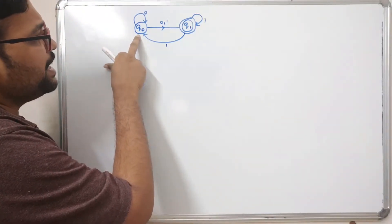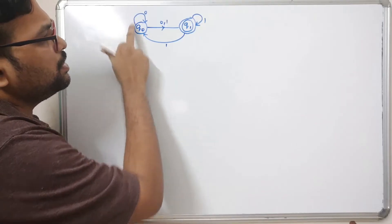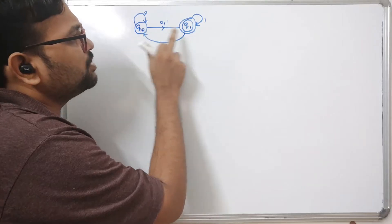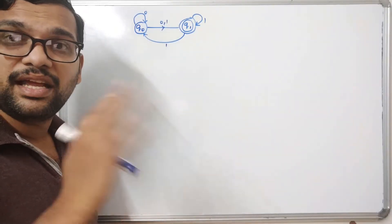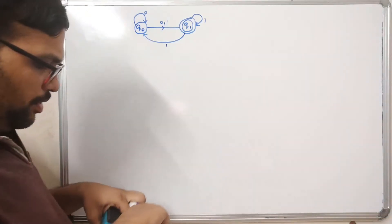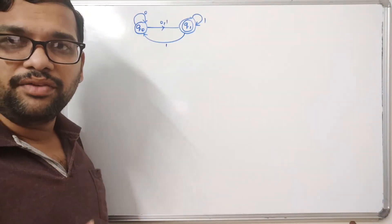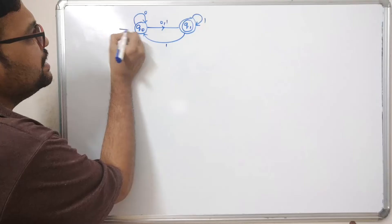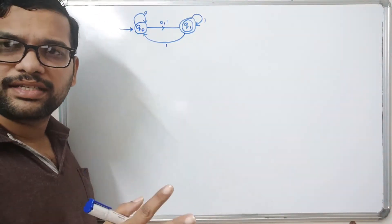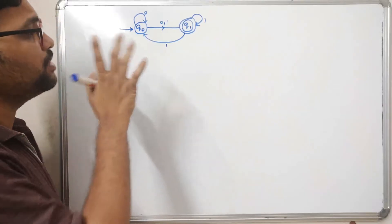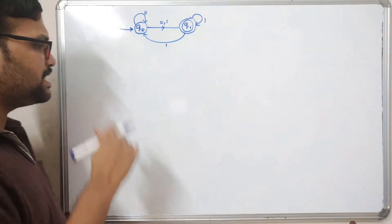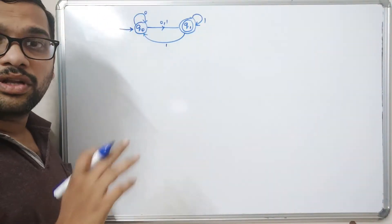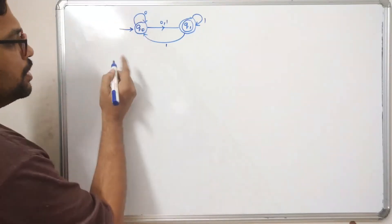For state q0, there is a transition on input zero that has two parts: a self-transition and for the same input it may change its state to q1. That implies it is an NFA. To convert this NFA to DFA, the first step is to find out the transition of the initial state. We know the initial state is q0, and we start finding the transitions for q0 over zero and one to get the next states.